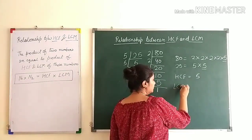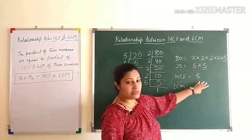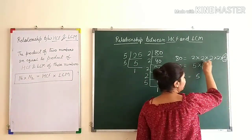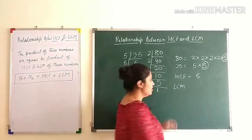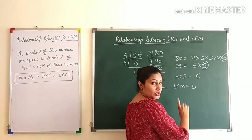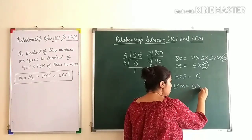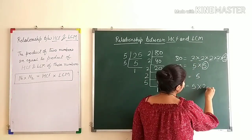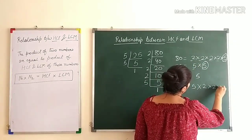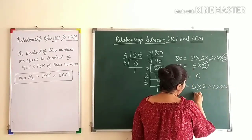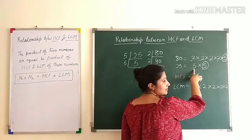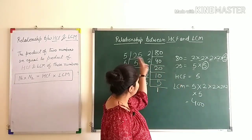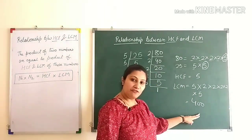Now let's find the LCM. We can find the LCM using these factors. The common factor is 5 only. To find the LCM, we write the common factor once and then multiply the remaining uncommon factors: 2 × 2 × 2 × 2 × 5 (uncommon from 80) and 5 (uncommon from 25), giving us 400. So the HCF of these numbers is 5 and the LCM is 400.